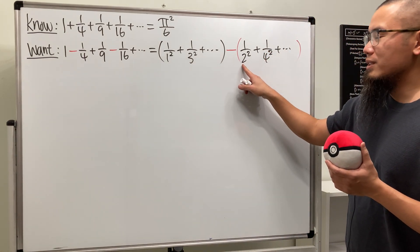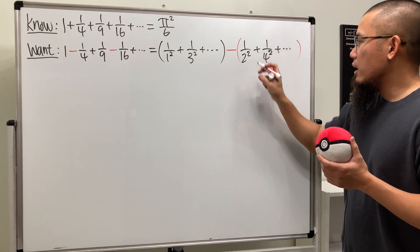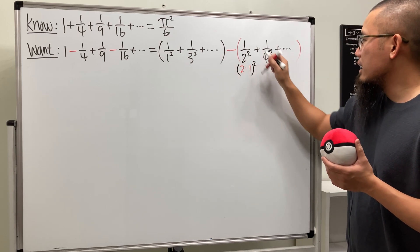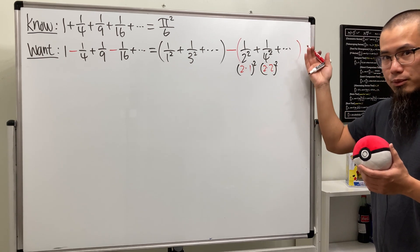And in fact, we see we have 2, 4, and the next one is 6, and so on. So let's take a look at this as 2 times 1, and of course we have to square that, and then 4 is the same as 2 times 2 squared, and 2 times 3 squared, and so on.